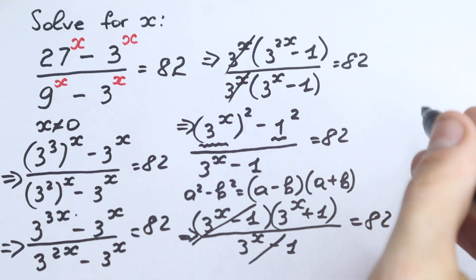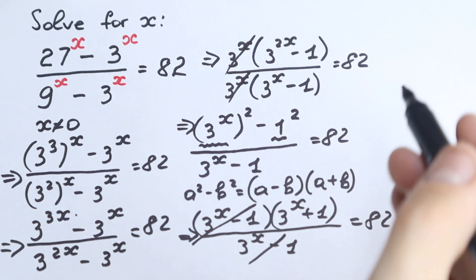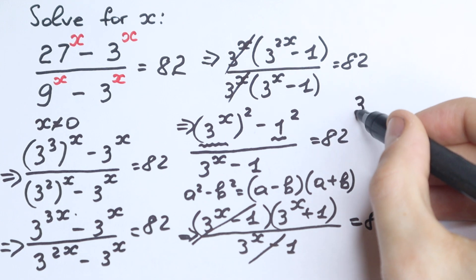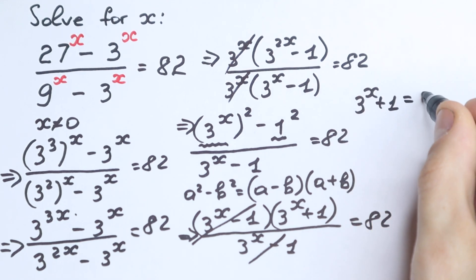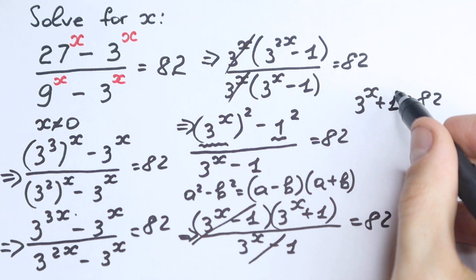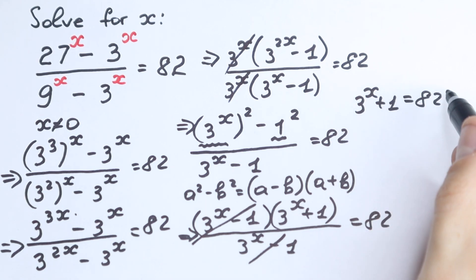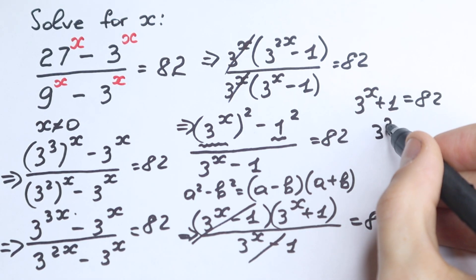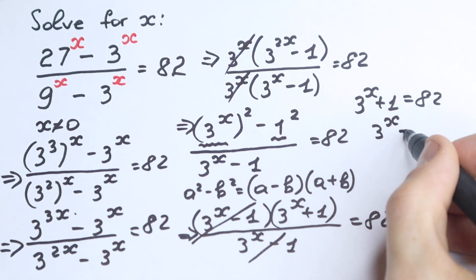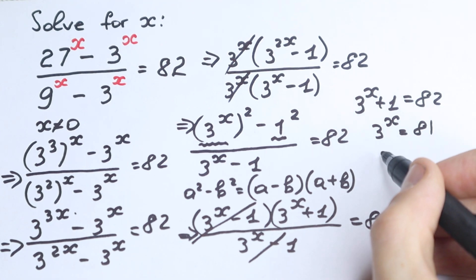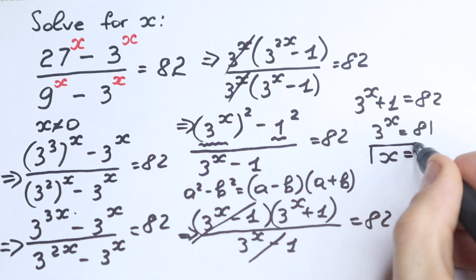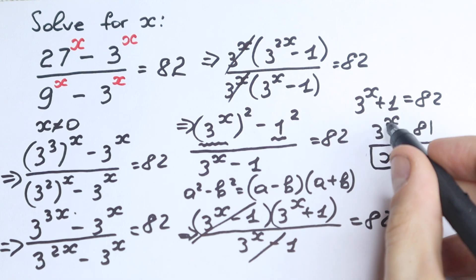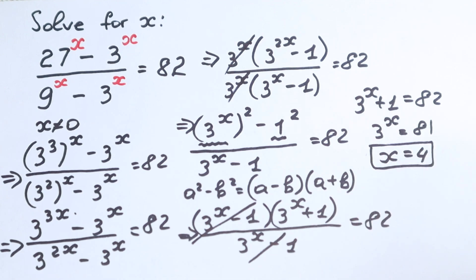Brilliant. We have 3 to the power (x + 1) equal to 82. Bringing the 1 to the right-hand side, we get 3 to the power x equal to 81. Therefore x equals 4, because 3 to the fourth power equals 81. This is our solution.